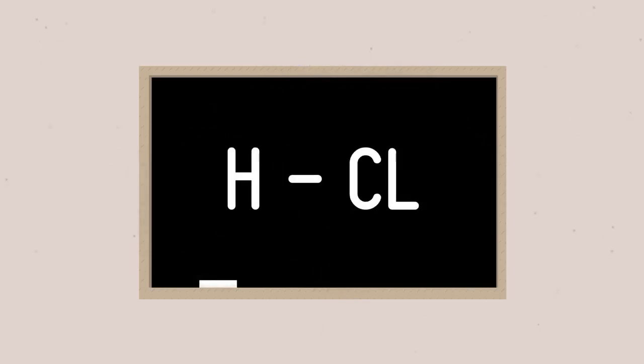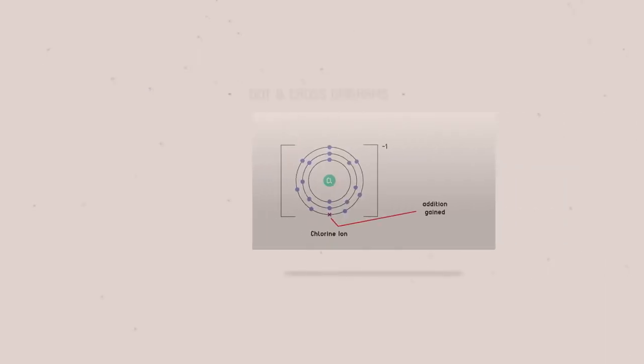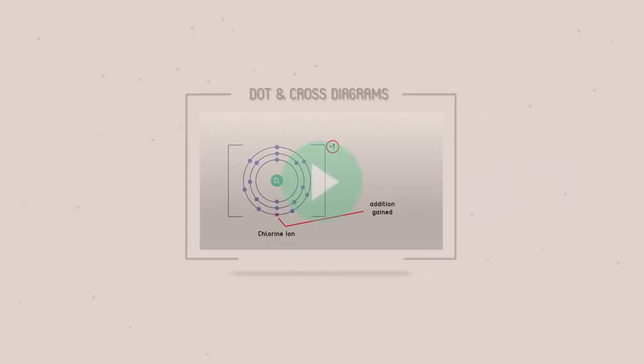In the displayed formula of a compound, we represent a covalent bond with a straight line, like this. We can also represent a covalent bond as a dot and cross diagram. These diagrams show only the valence electrons. To learn more about dot and cross diagrams, watch our video on dot and cross diagrams.